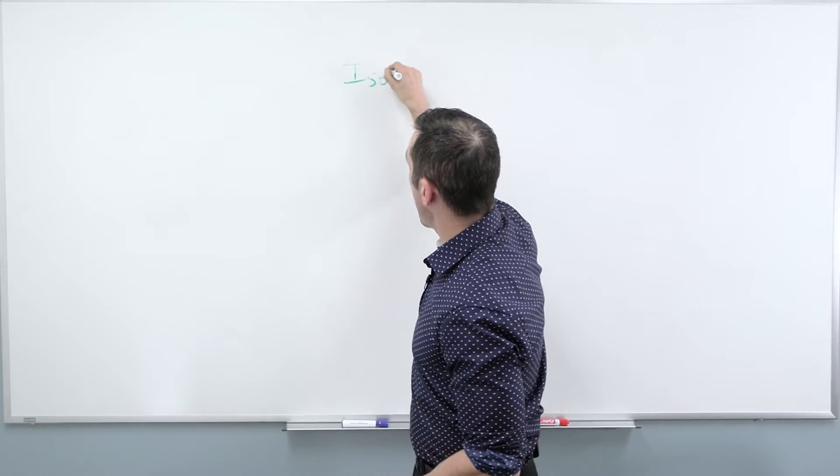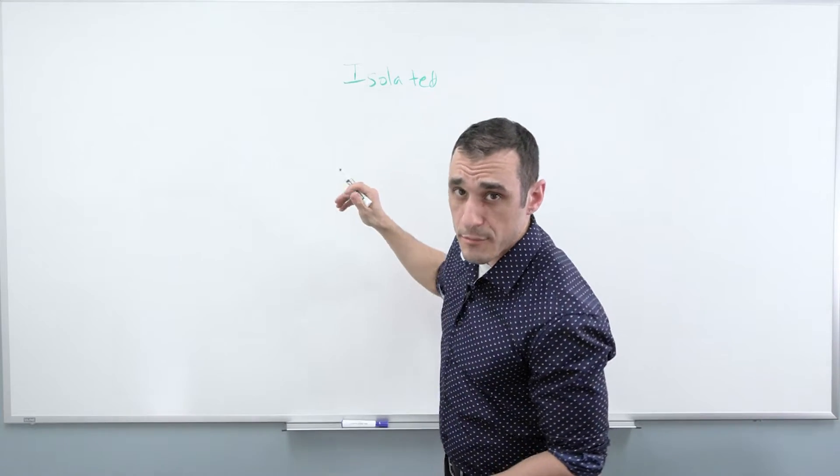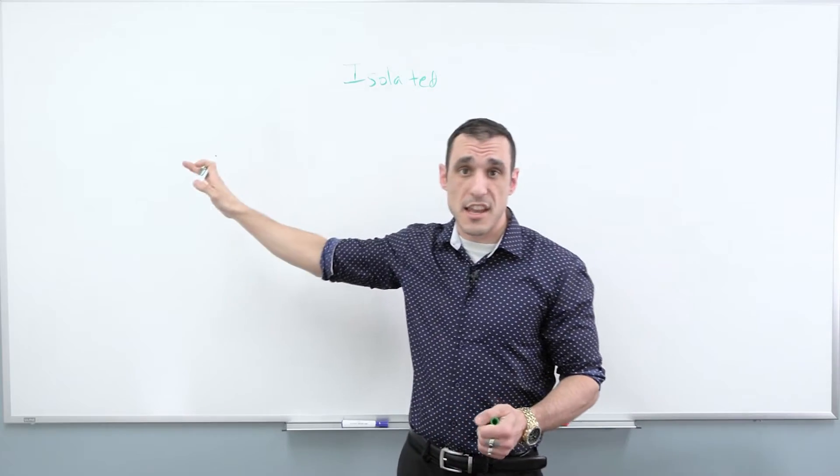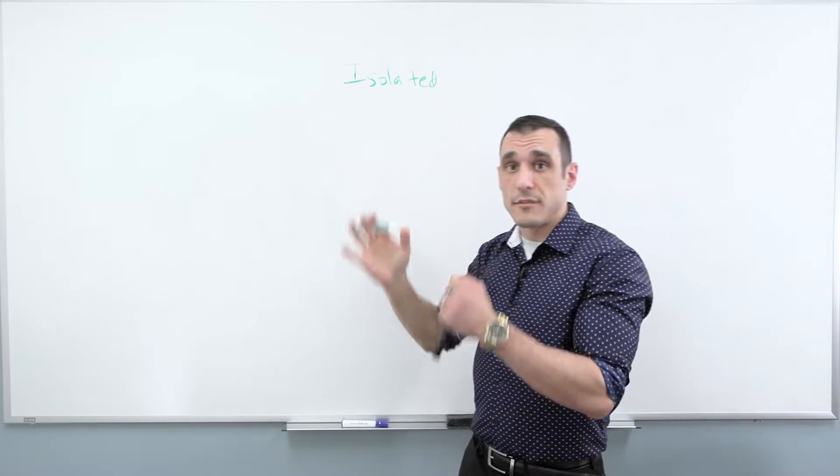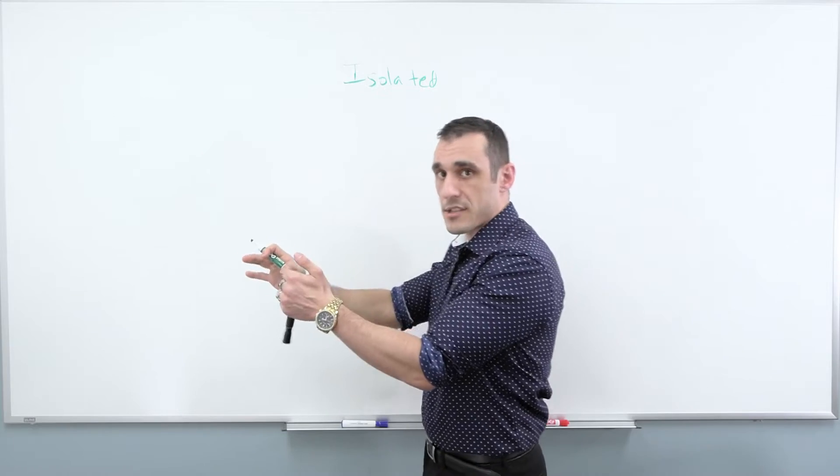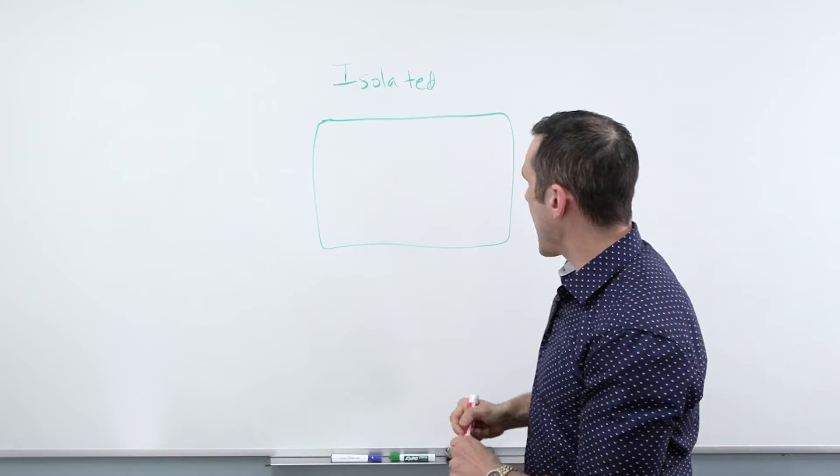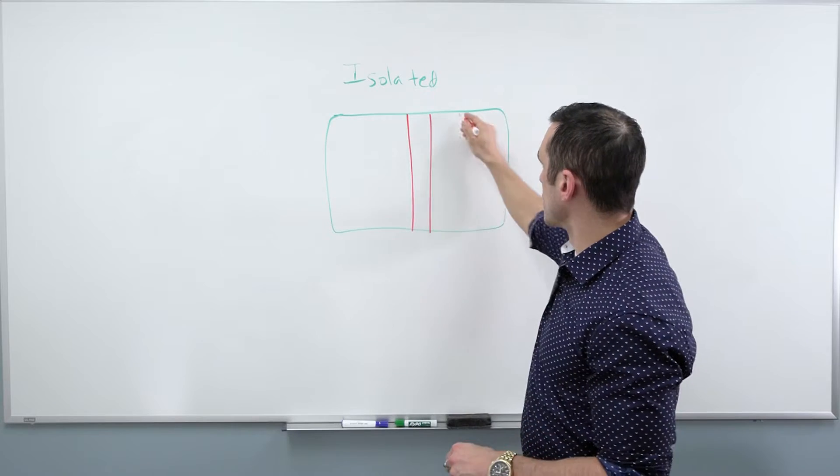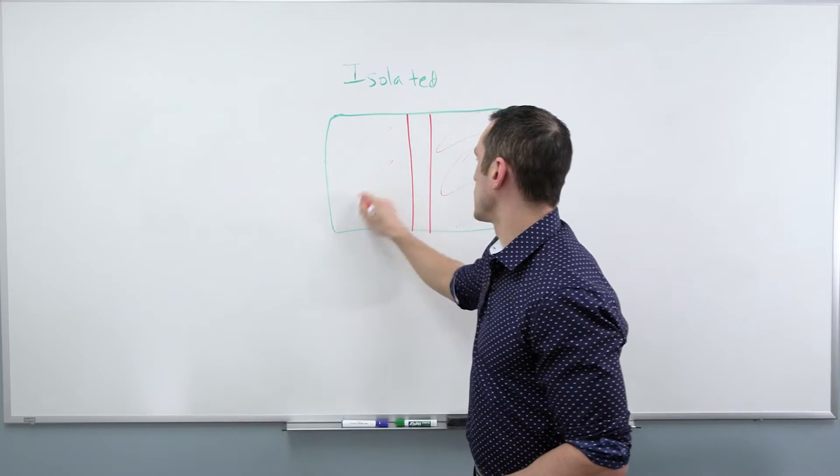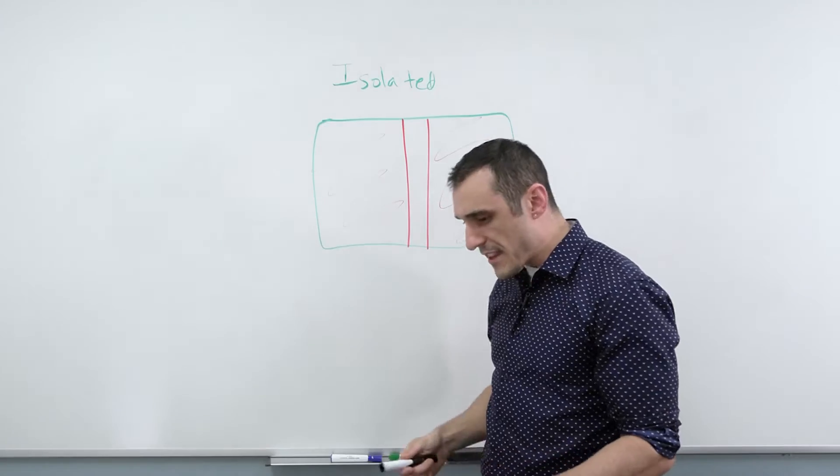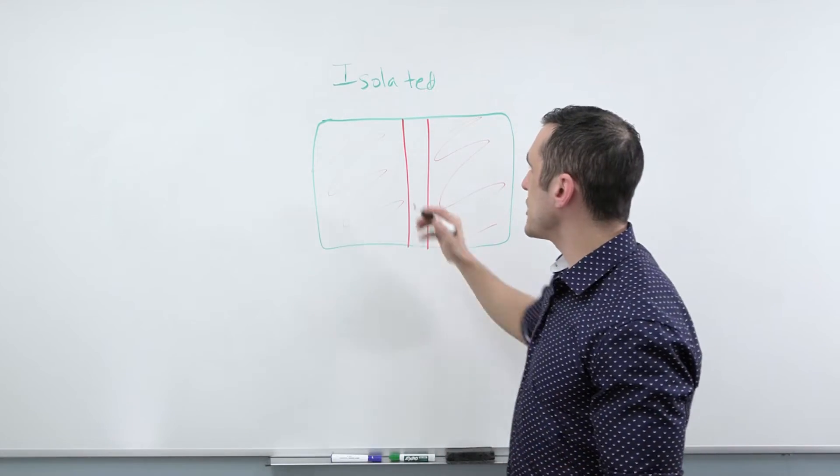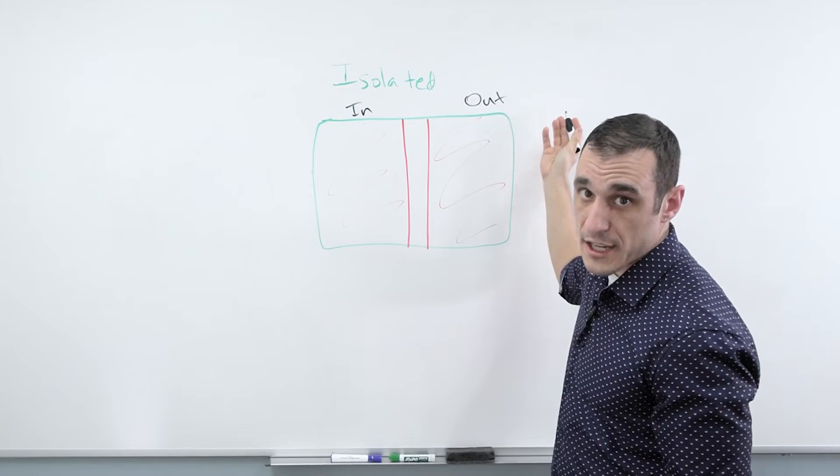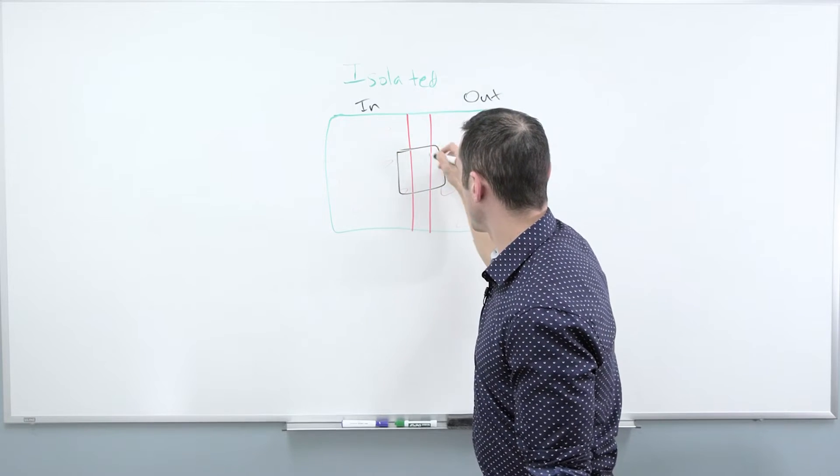Now, an isolated power supply. These can be a little tricky because in an isolated power supply, you actually have some level of isolation between the input power side and the output power side. What that means is that I actually do have some separation between my ground regions. This is literally a plane region. This could also literally be a plane region.